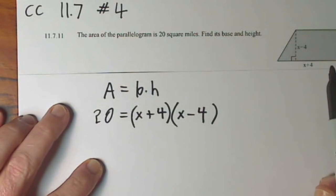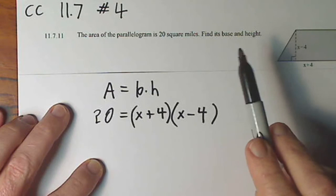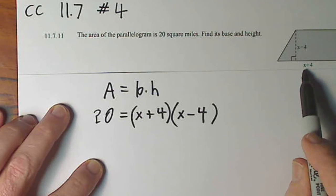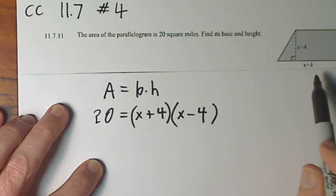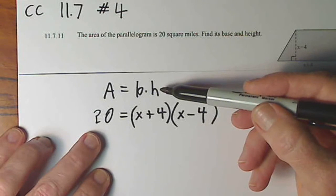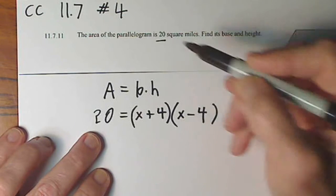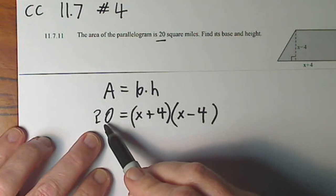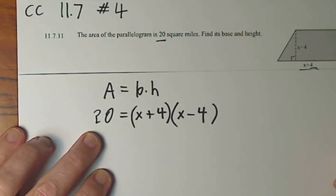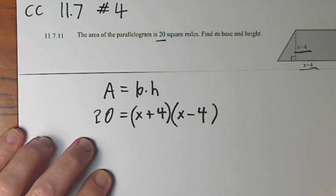So again, in order to solve this problem, in order to find the base and the height, they want me to get rid of these x's and find out the value for that. You use the formula, area is equal to base times height. The area is given to be 20, so I put a 20 right there. The base is given to be x plus 4, and the height is given to be x minus 4.